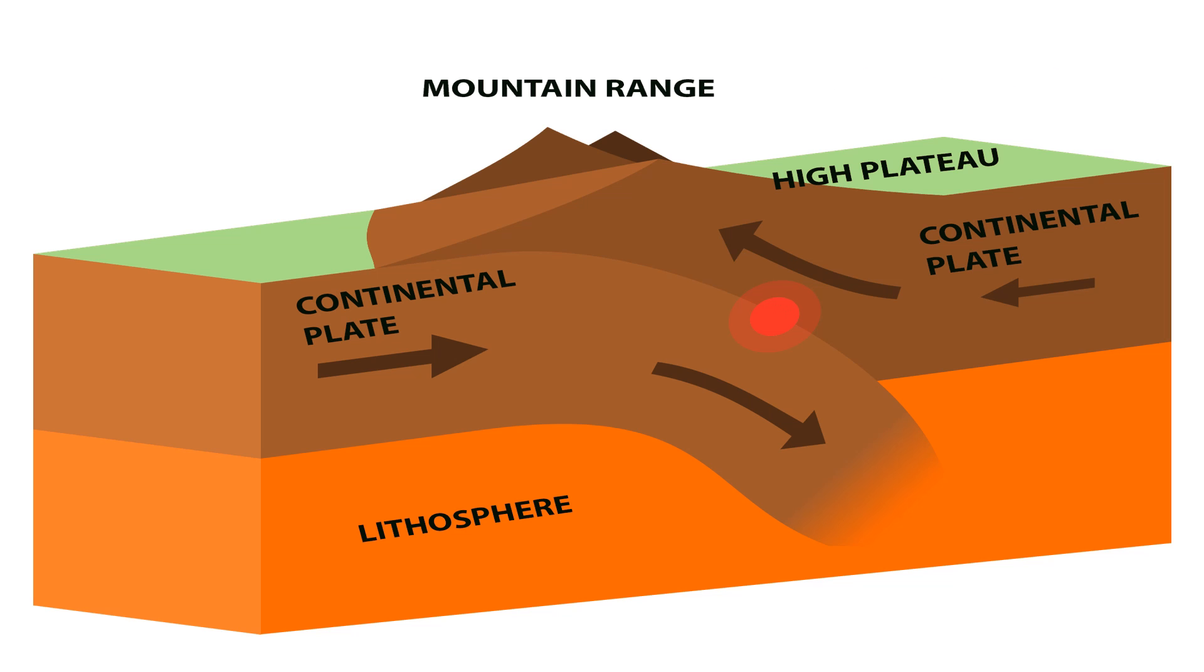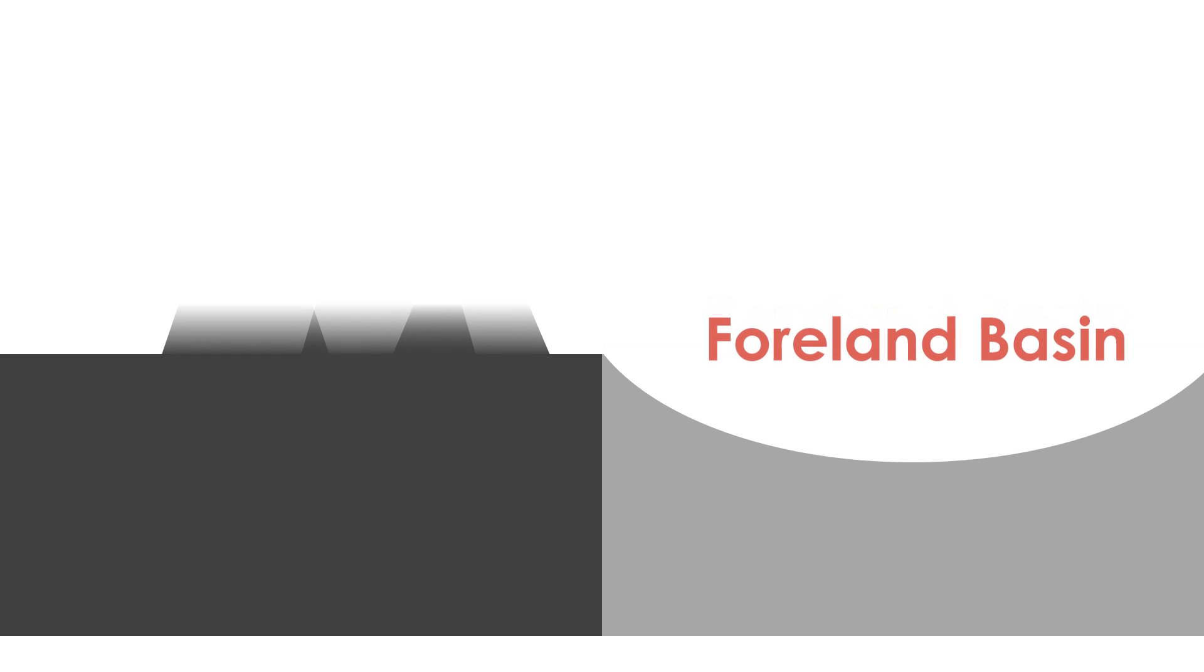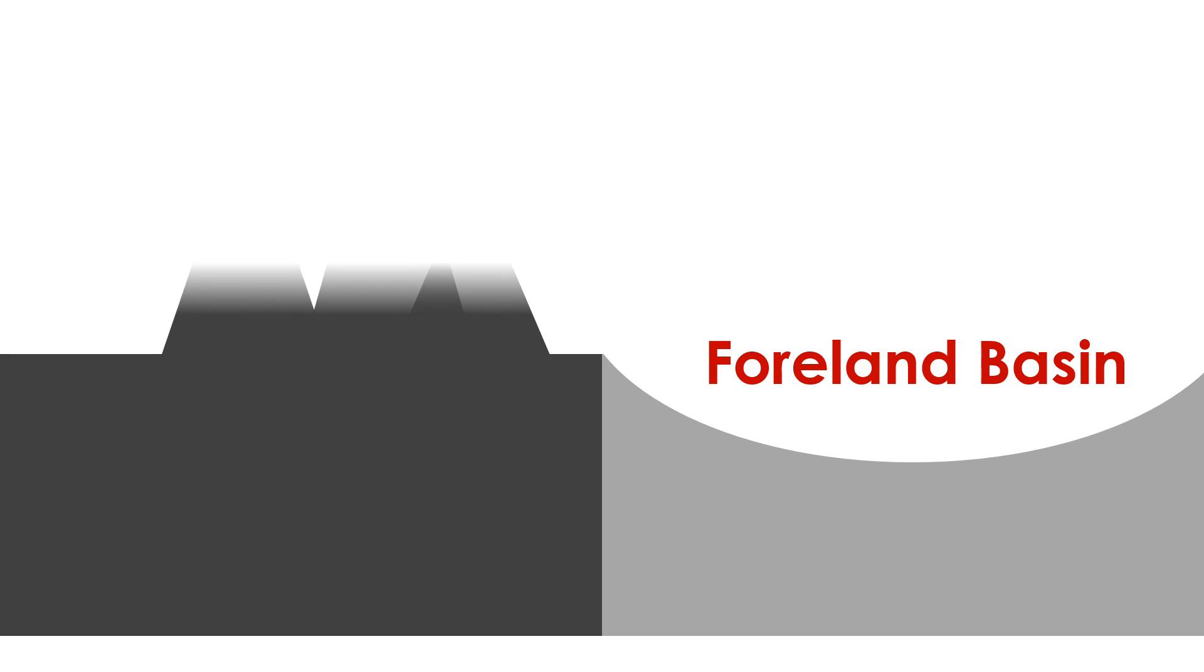If convergence continues and oceanic crust is completely subducted, two bodies of continental crust may collide, resulting in an orogeny or mountain building event, as well as the formation of a new mountain chain or orogenic belt. This collision causes one of the tectonic plates to bend and flex downward in the area adjacent to the new mountain belt that is forming. We call this basin a foreland basin.